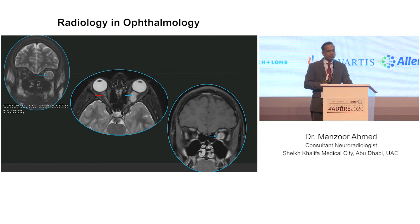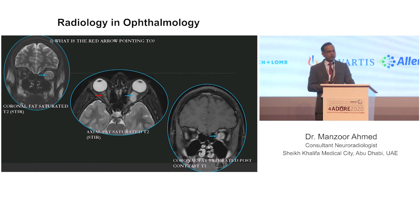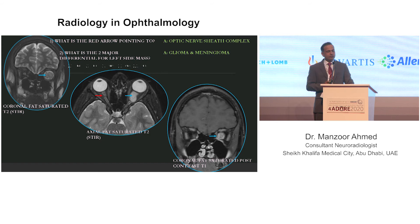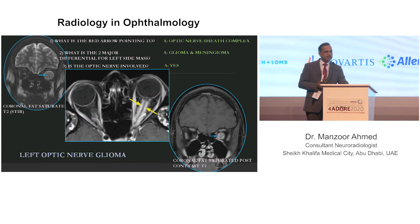Next case: coronal fat-suppressed T2 STIR image, axial fat-suppressed T2, and coronal fat-suppressed post-contrast T1 image. The red arrow points to the optic nerve sheath complex — a normal structure. The two major differentials for the left-sided mass are glioma and meningioma. The optic nerve is involved — so the diagnosis is left optic nerve glioma, seen as an enhancing lesion. In a companion case the diagnosis is meningioma, showing the tram-track sign where the tumor surrounds the optic nerve.